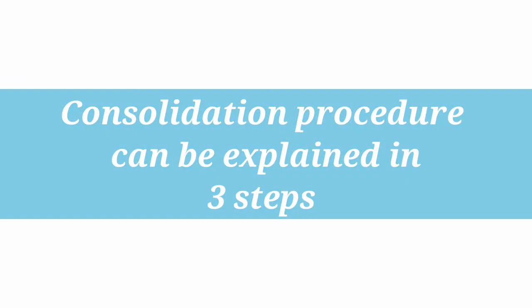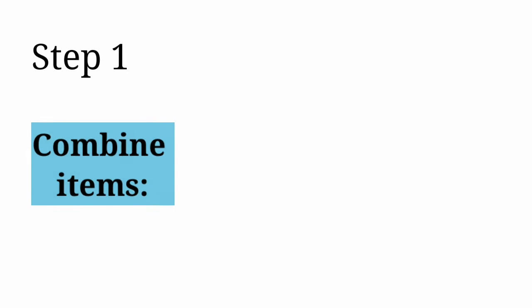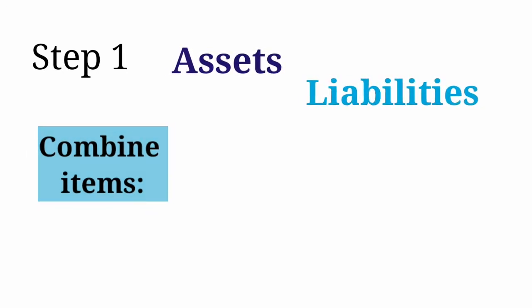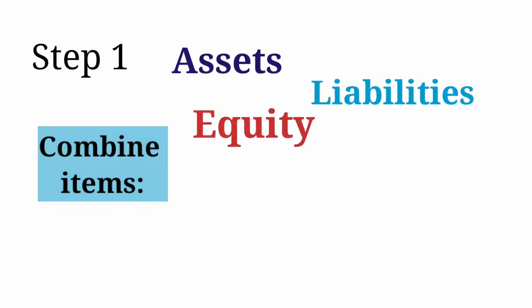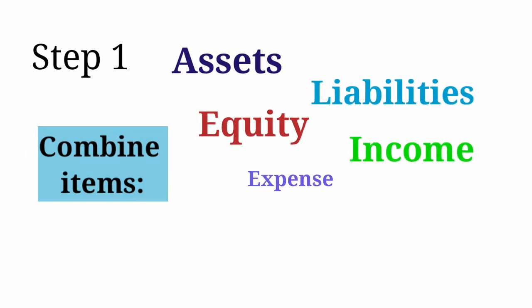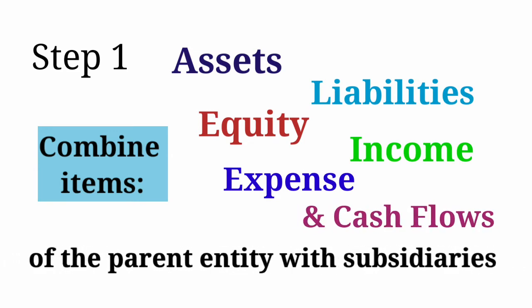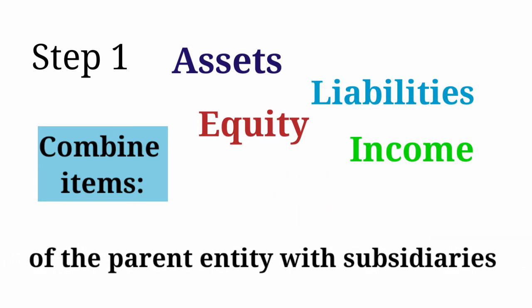Consolidation procedure can be explained in 3 steps. Step 1: Combine items of assets, liabilities, equity, income, expense, and cash flows of the parent with those of its subsidiaries.